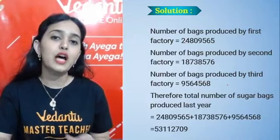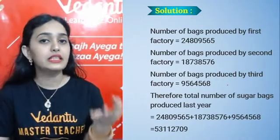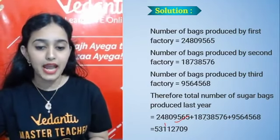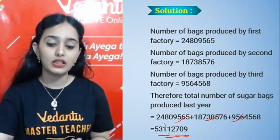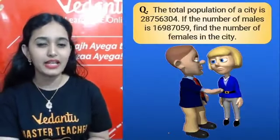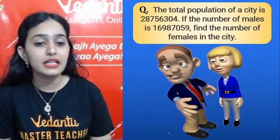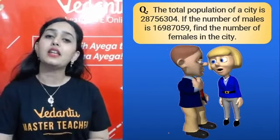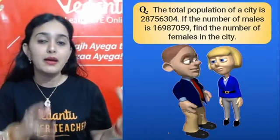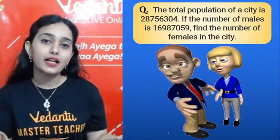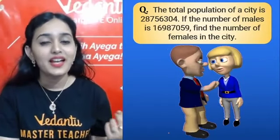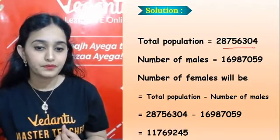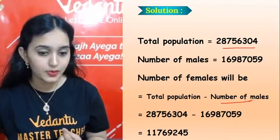The answer to the sugar factory question: there were 3 factories, each producing a certain number of bags, so we simply added the 3 given numbers to get the total bags produced last year. Next question: the total population of a city is given and the number of males is given — find the number of females. We simply subtract the male population from the total.